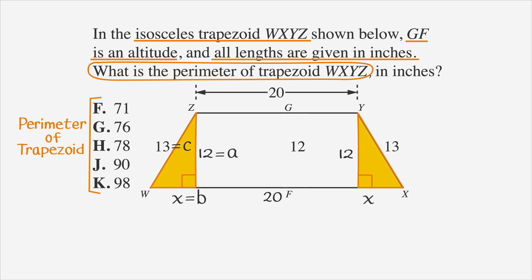To solve for X, we just need to use the Pythagorean theorem. A squared plus B squared equals C squared. If we plug in for A, B, and C, we get 12 squared plus X squared equals 13 squared, or 144 plus X squared equals 169. We can solve for X by subtracting 144 from both sides to get X squared equals 25, and take the square root of both sides to find that X equals 5.